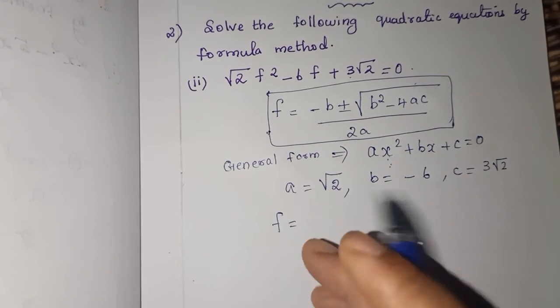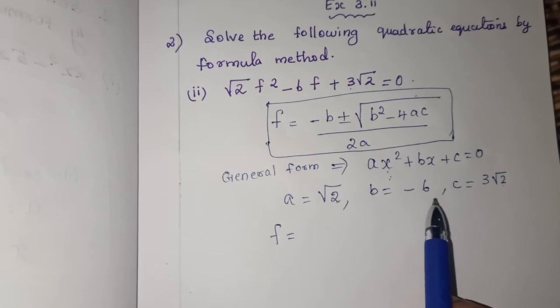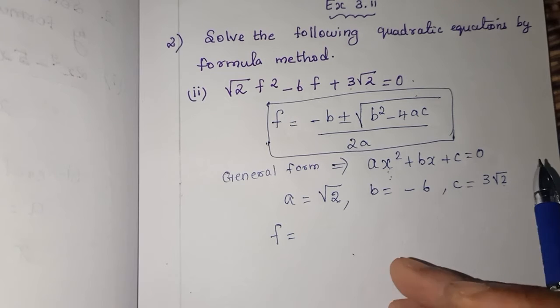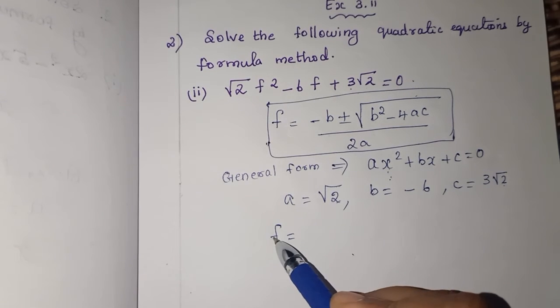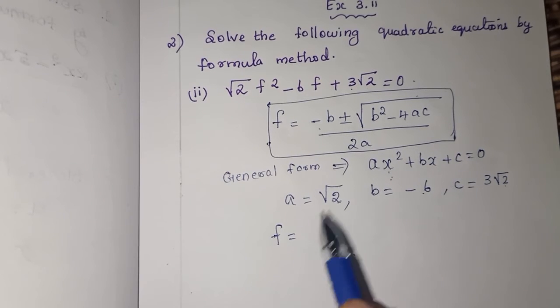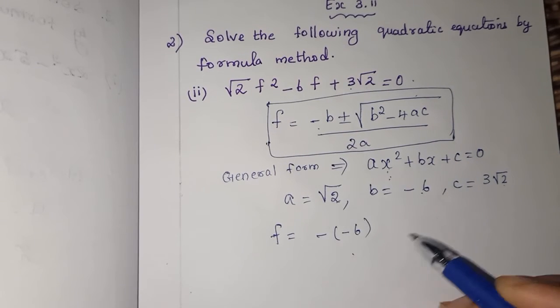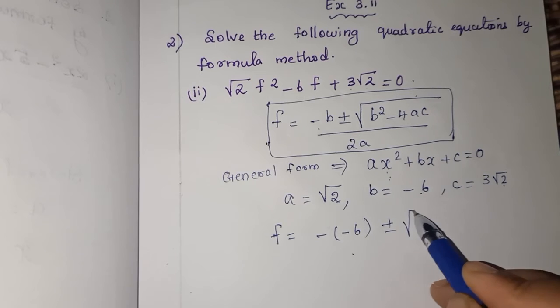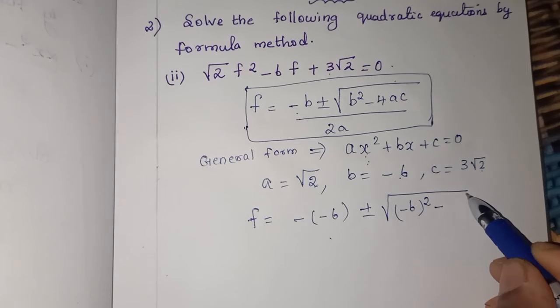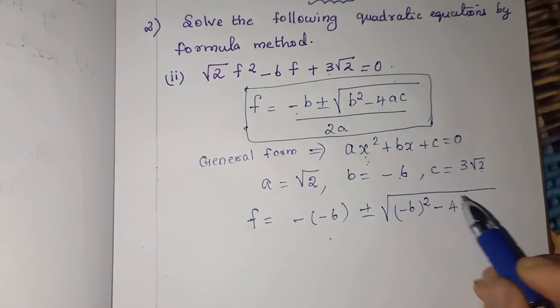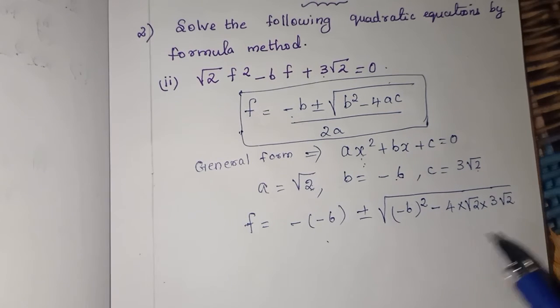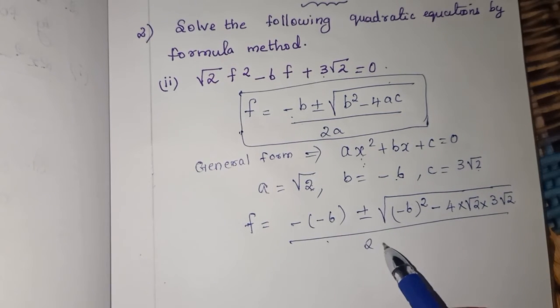Carefully apply because here square root comes. You need not worry but you have to take interest and do. Apply the values and concentrate well. f = -b. Already we have -6, so minus of -6 ± √(b²) minus 4 into a which is √2 and c which is 3√2.